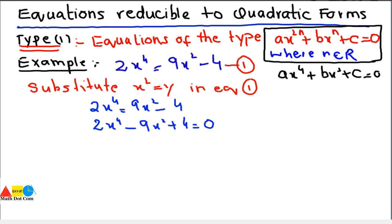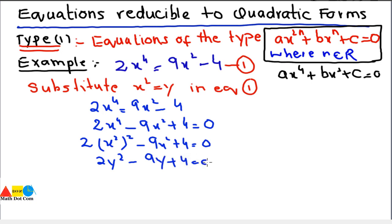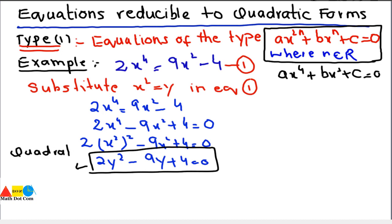Now we substitute x squared equals to y, so x^4 can be written as x squared whole squared. Substituting y for x squared, it becomes 2y squared minus 9y plus 4 equals to 0. It is clear from here that the given equation is now in quadratic form, with the power of the variable being 2. We can solve it using any of the three methods for solving quadratic equations, and here we will use the factorization method.